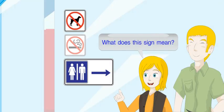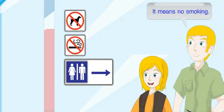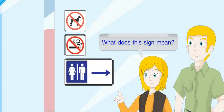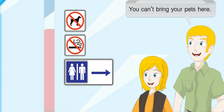What does this sign mean? It means no smoking. You can't smoke in here. What does this sign mean? It means no pets. You can't bring your pets here.